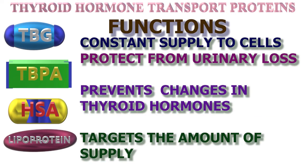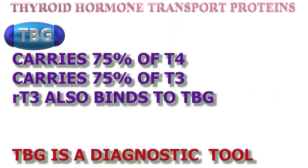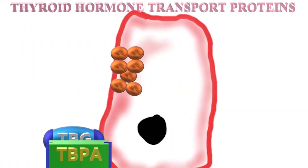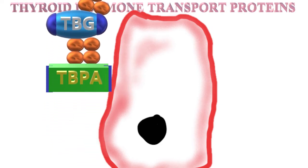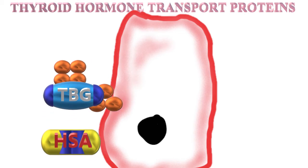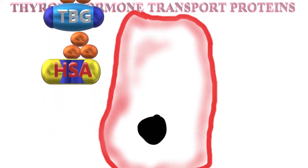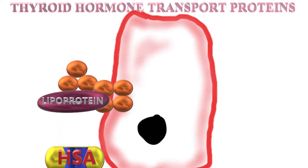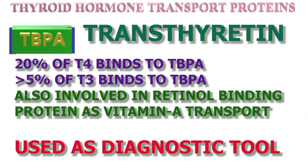The functions of these transport proteins are to ensure a constant supply of hormone to the cells, prevent urinary loss, prevent rapid changes in thyroid hormone levels, and regulate the target amount of hormone delivery. 75 percent of T4 is bound to thyroxine-binding globulin and 20 percent to human serum albumin. Thyroxine-binding globulin carries the major part of T3, T4, and reverse T3, so quantitative and qualitative changes in TBG concentration have a high impact on total T3 and T4 levels.